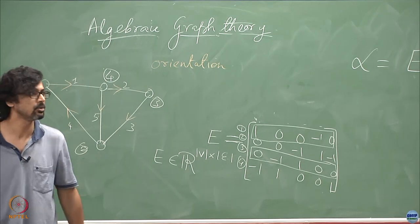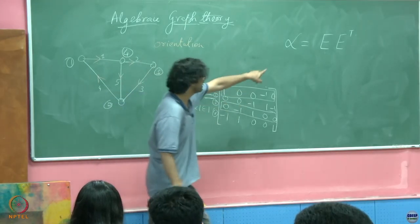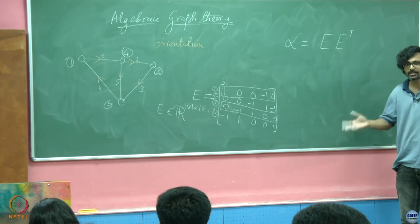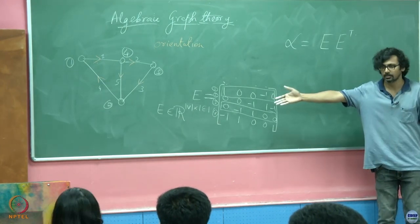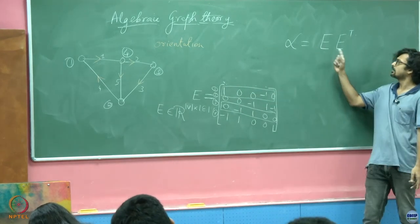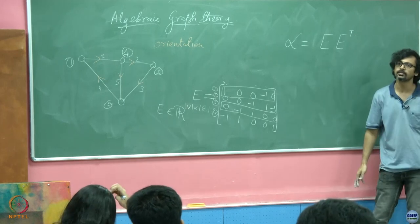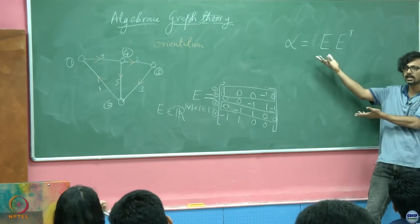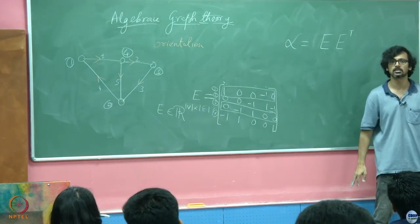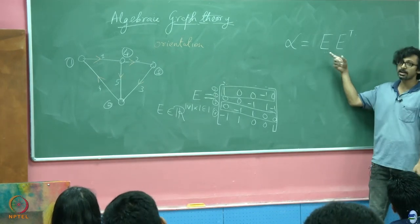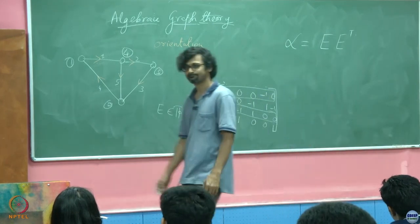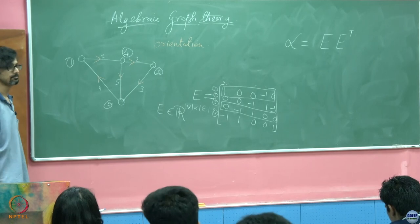We have indeed verified that every entry of EE^T matches the Laplacian. The off-diagonal entries turn out to be exactly the entries of the negative of the adjacency, and the diagonal entries are just the degrees of the vertices. So just like you have D minus A, you also have EE^T as this Laplacian.